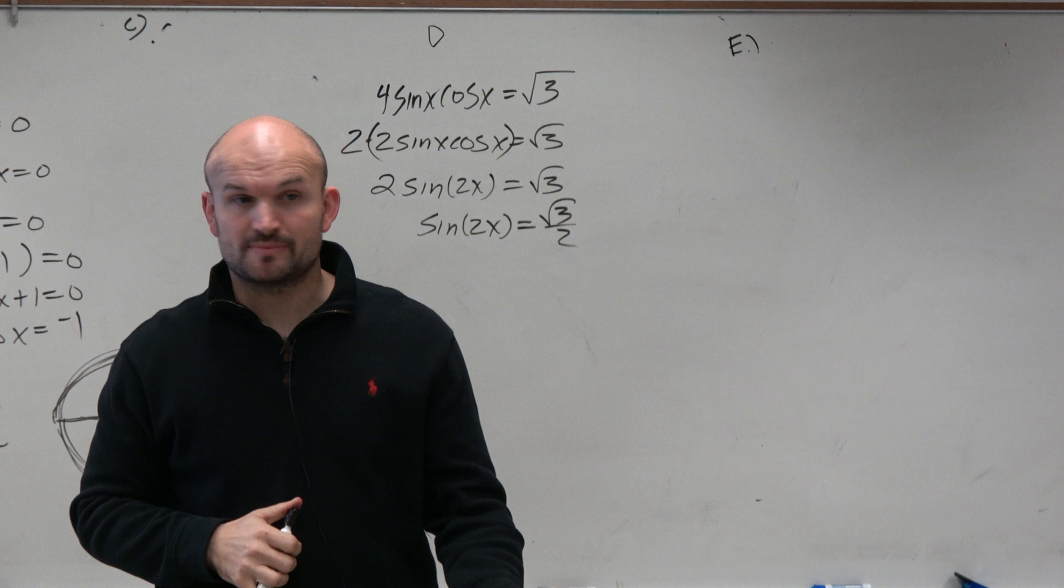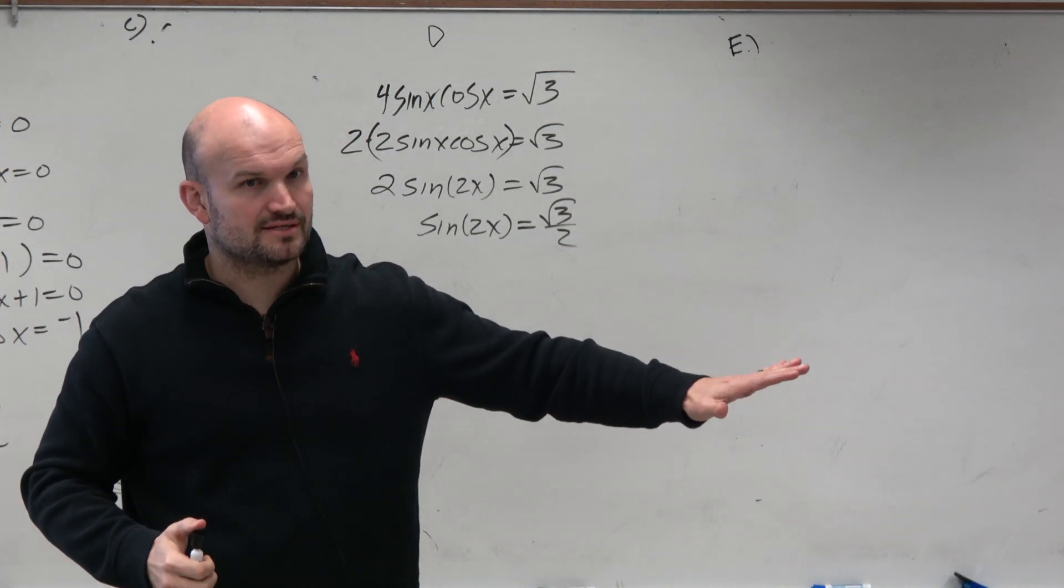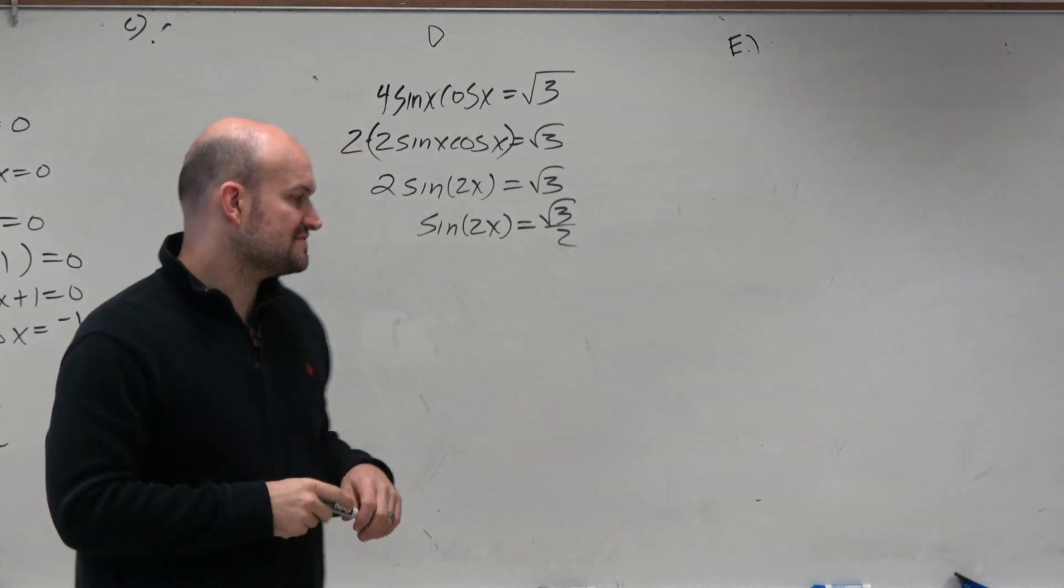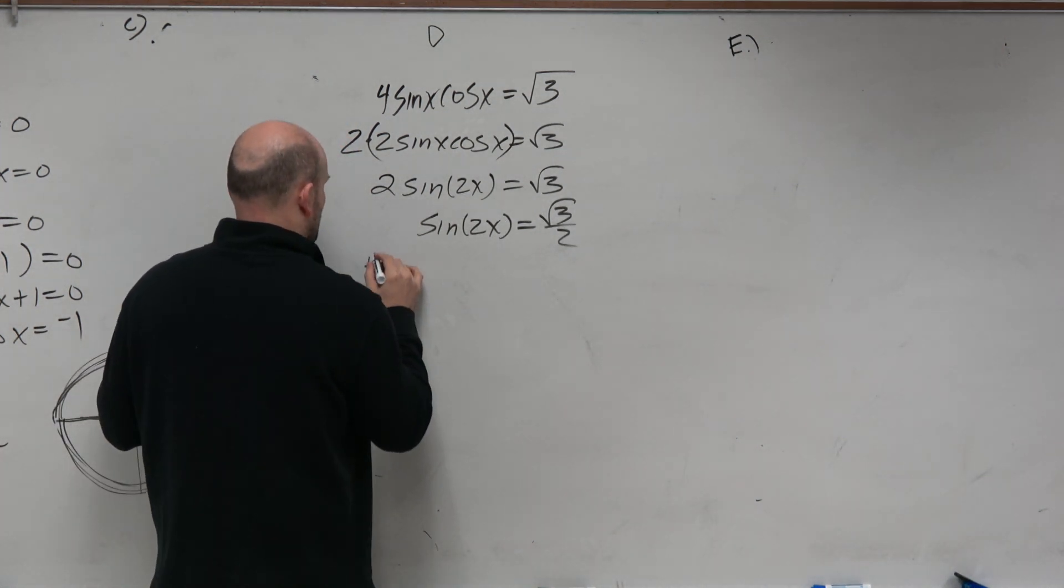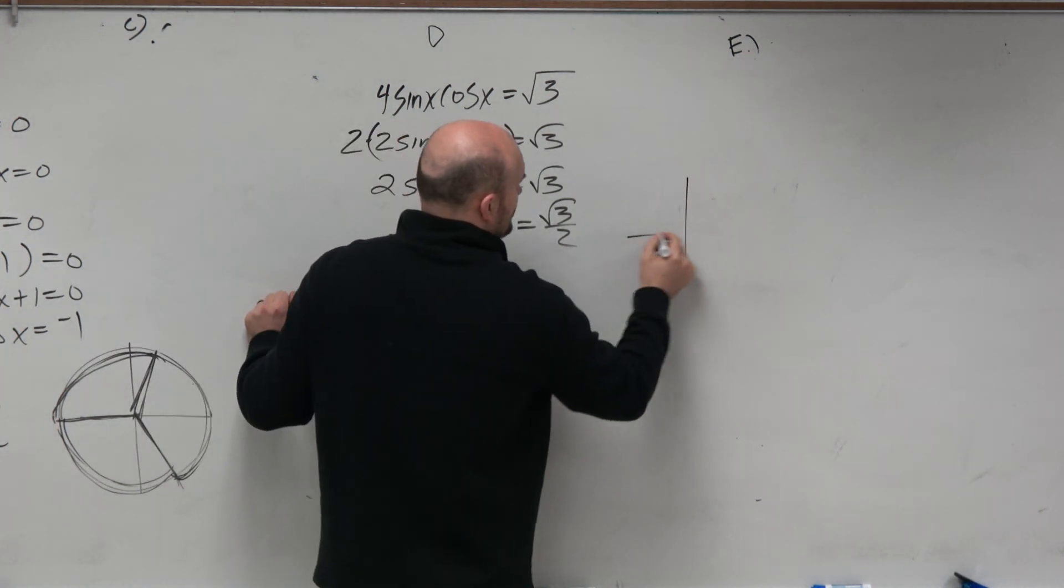Now we can solve it like we did in chapter 4. Solve it the way we know how to do it and then just divide by 2 at the very end. So the first thing I'm going to do is find all the solutions. So therefore, knowing our unit circle...